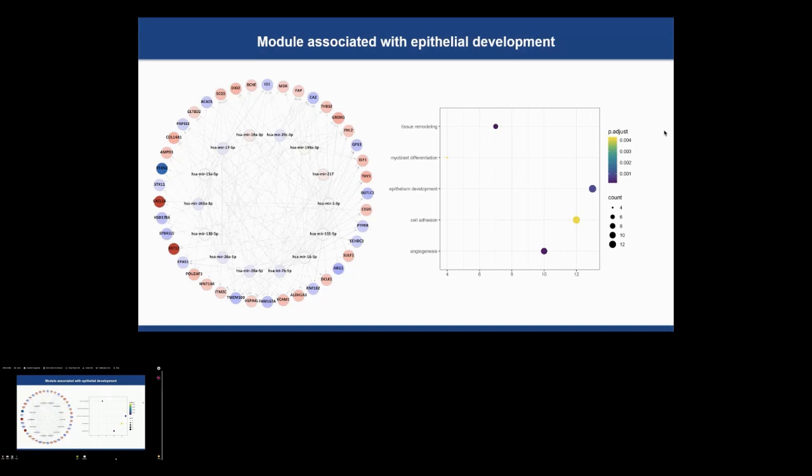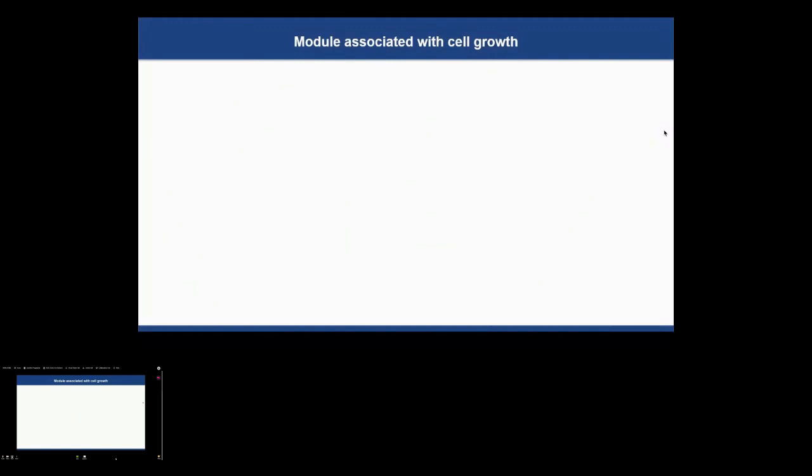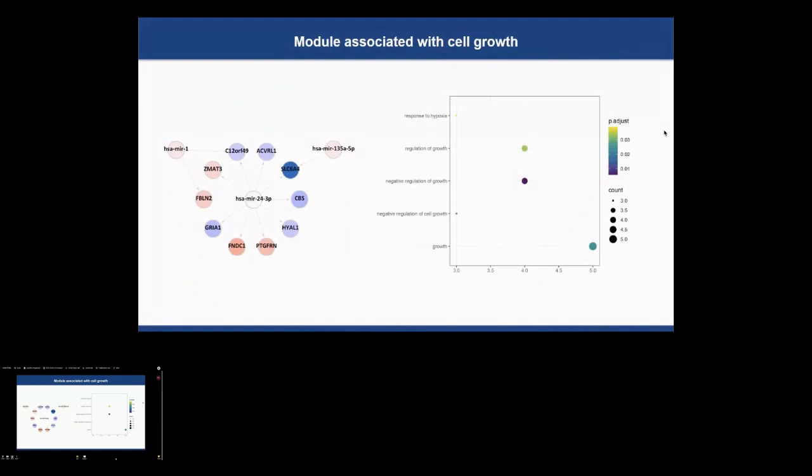Module 2 was associated with 13 Gene Ontology terms, including processes related to negative regulation of the cell cycle, blood vessel remodeling, and response to hypoxia.